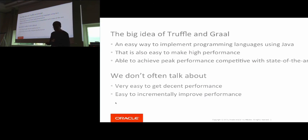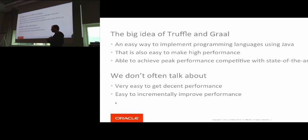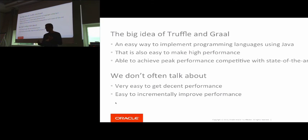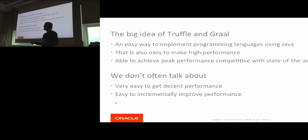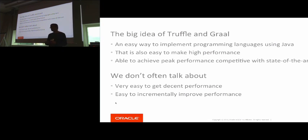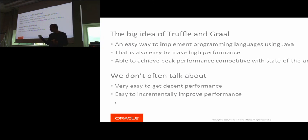What we don't always talk about is that the framework is also fairly good for incrementally improving your existing implementation. Once you write an implementation using just the most basic primitives, it should already be fairly decent in terms of performance. But to take it over the edge and make it really fast, you don't have to do all the work at the same time — you can add additional pieces gradually to make it more and more faster.